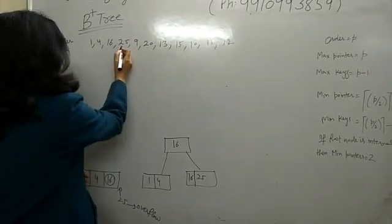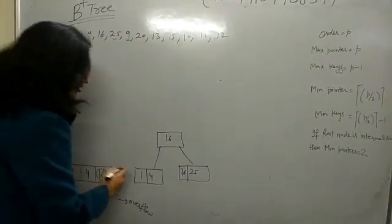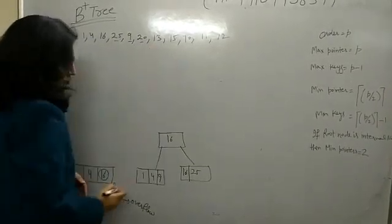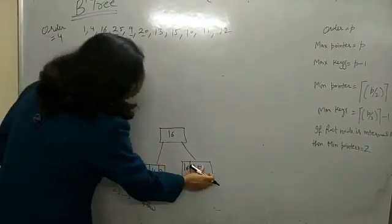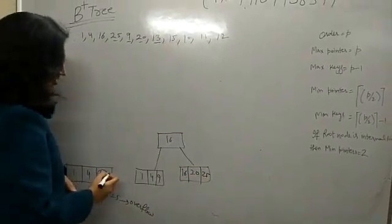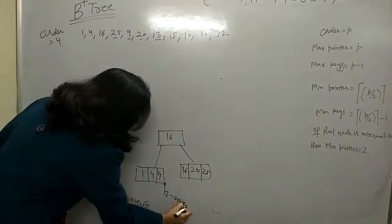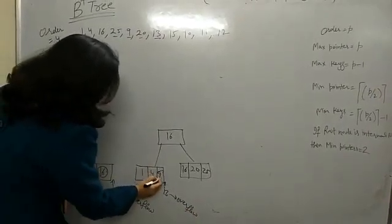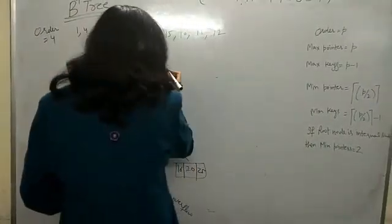25 is done. Next is 9 — since 9 is less than 16, it goes to the left child. Next is 20 — since 20 is greater than 16, it comes to the right. Then 13 should also come to the left side. But again, overflow condition is generated, so I pick the 3rd element as the middle element and it goes up.